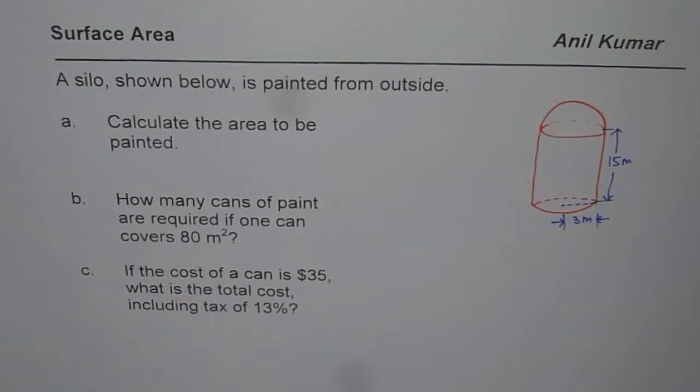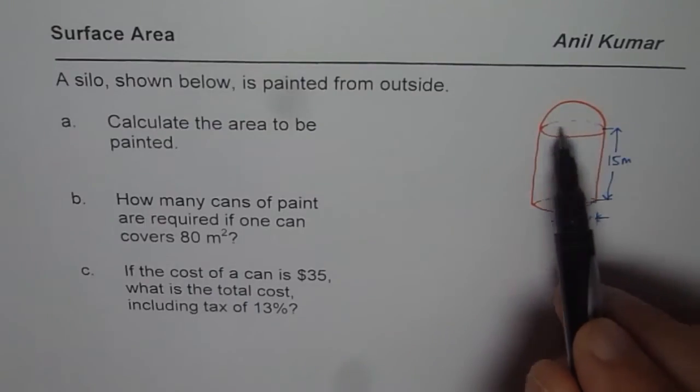And part C: if the cost of a can of paint is $35, what is the total cost including tax of 13%? I missed a few parts in the question but I hope you get the gist of it.